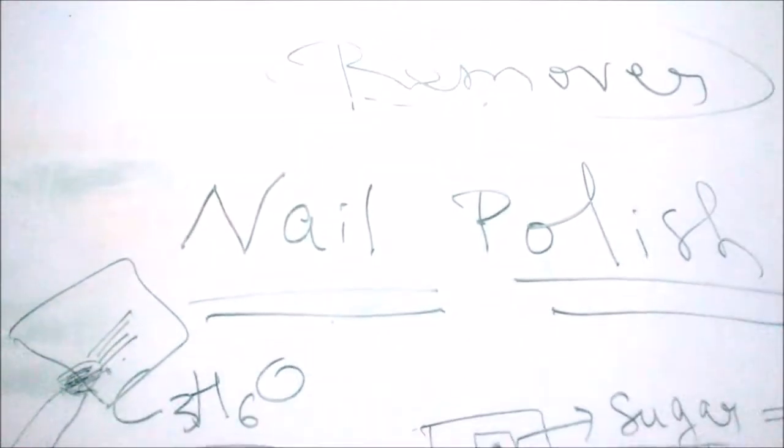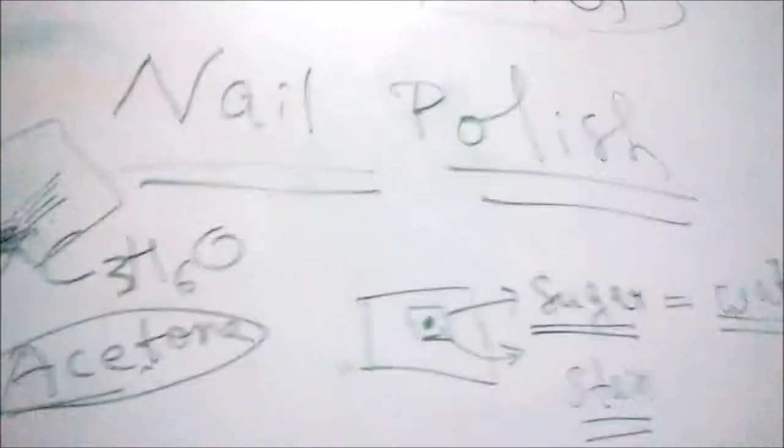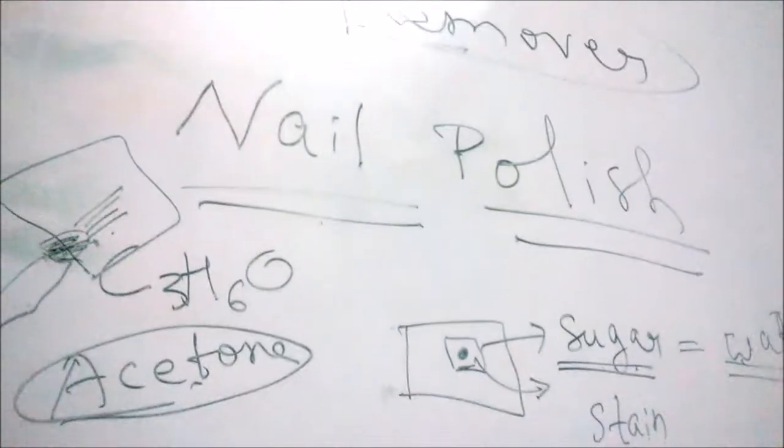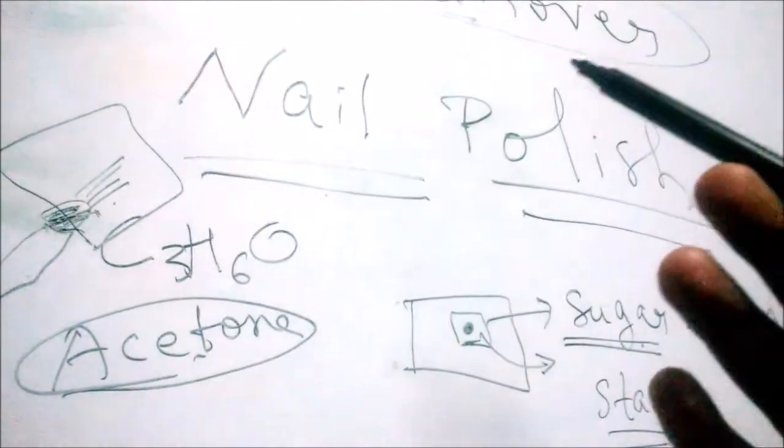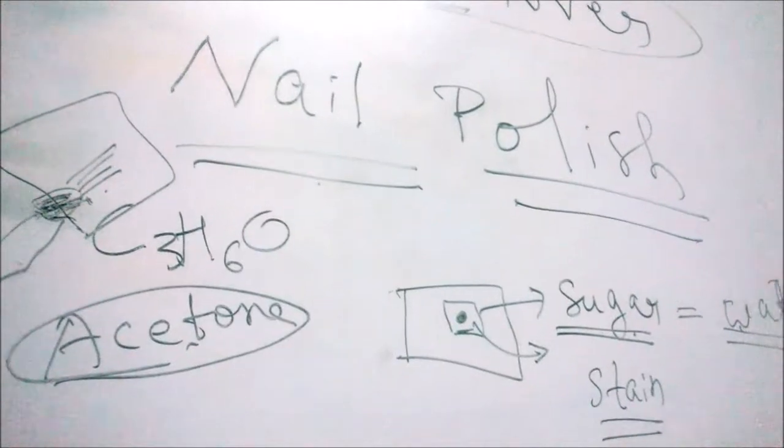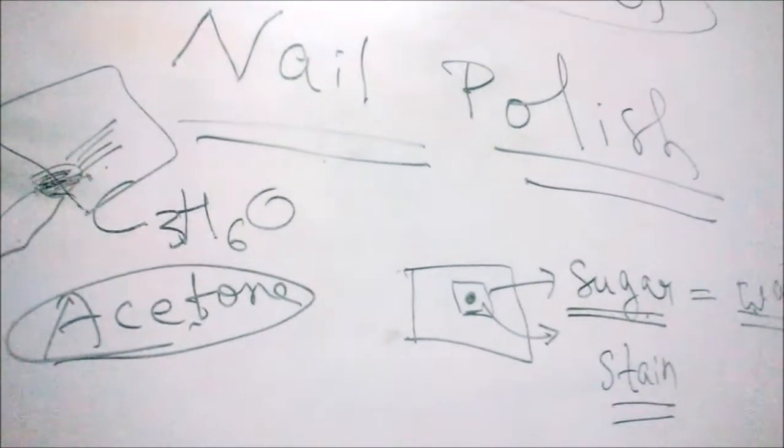So what if tomorrow in the future we make nail polish with different components? What we need to find is in which component it is going to dissolve, and with that component we will make the nail polish remover.